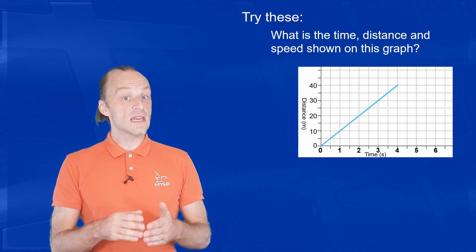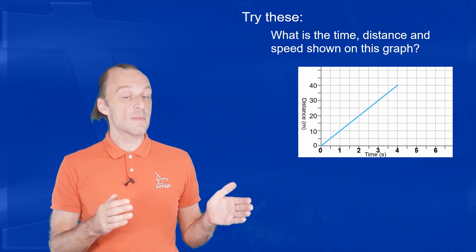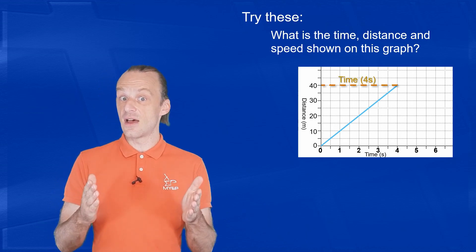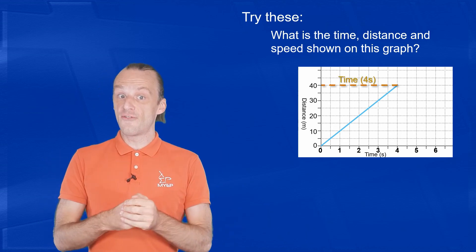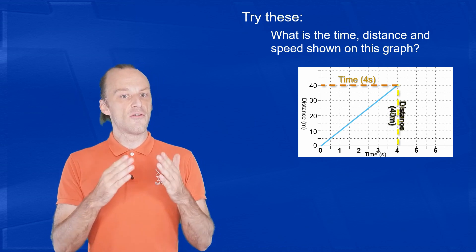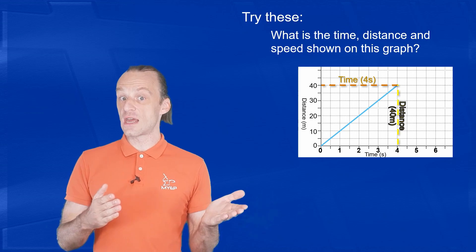On the graph, we can see that the line stops when the time is at 4 seconds on the x-axis. And at that time, the line has risen to 40 meters on the y-axis. So the object traveled 40 meters in 4 seconds.